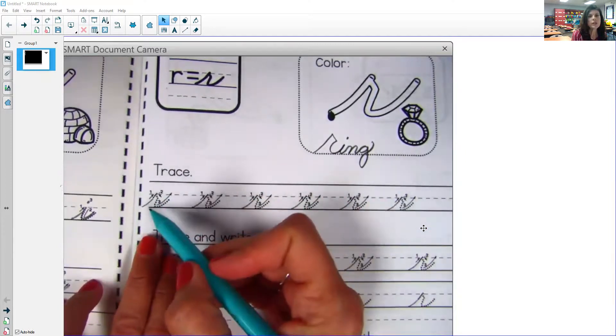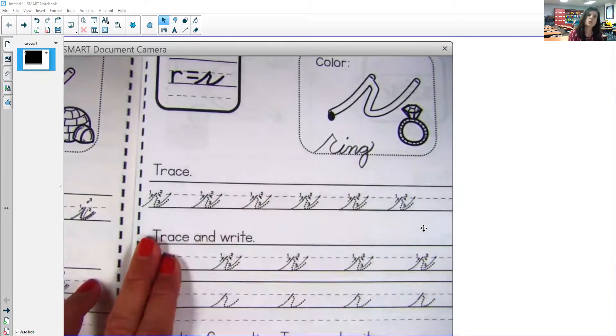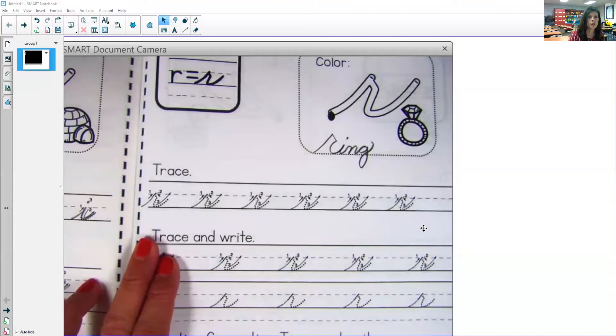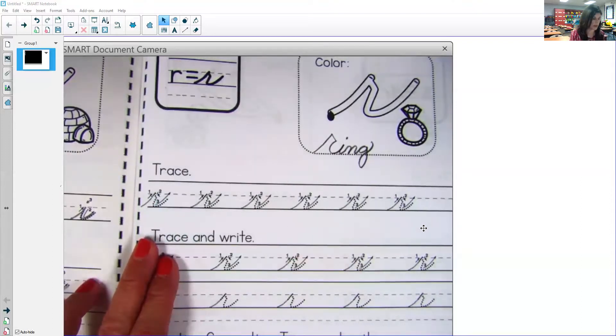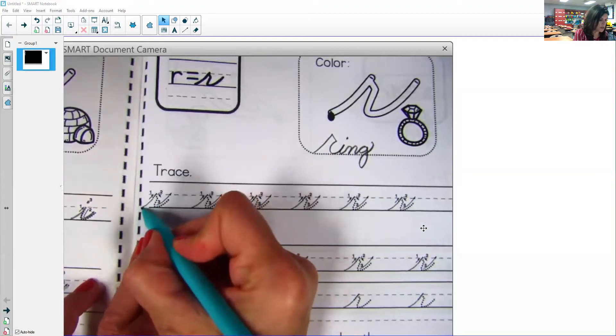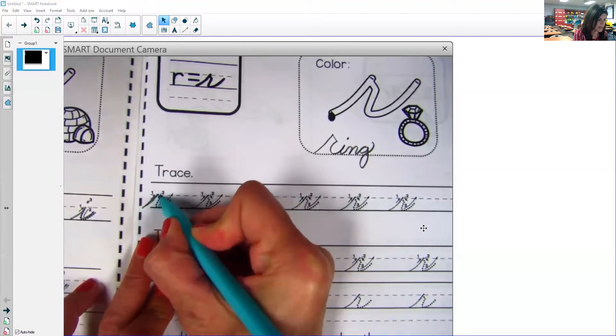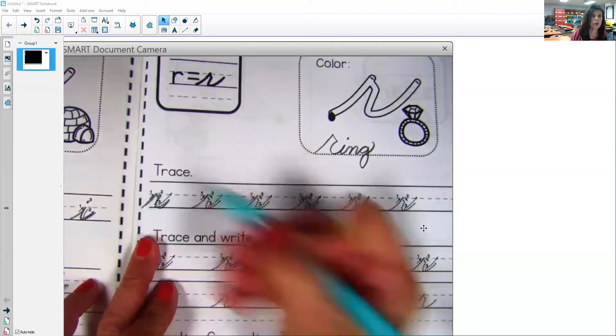So once again, just like a helicopter, it's going to start at the baseline, which is the bottom, go up, come back down and scoop up again. So just be careful because your R has a little slant when you get to that middle line. So we're going to start at the base, go up, slant down a little bit, come down and scoop up.